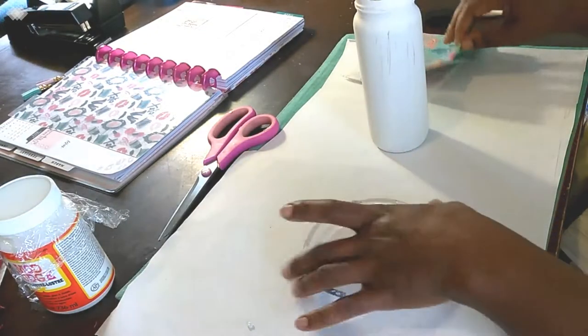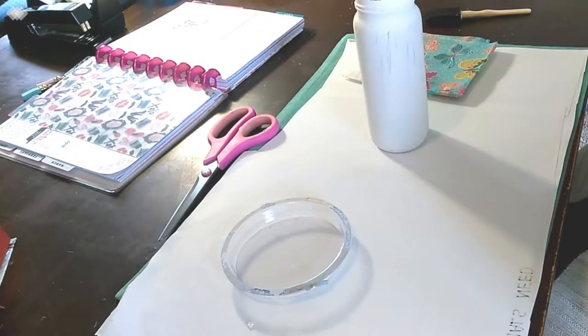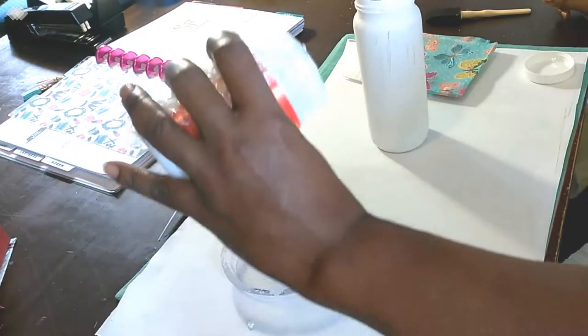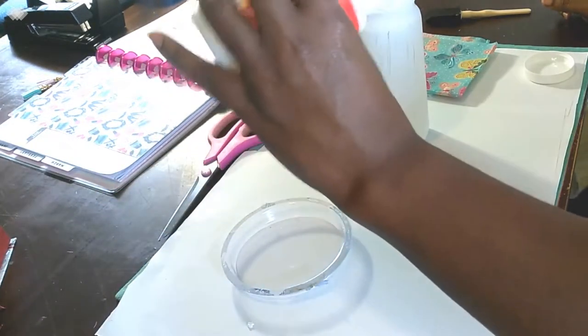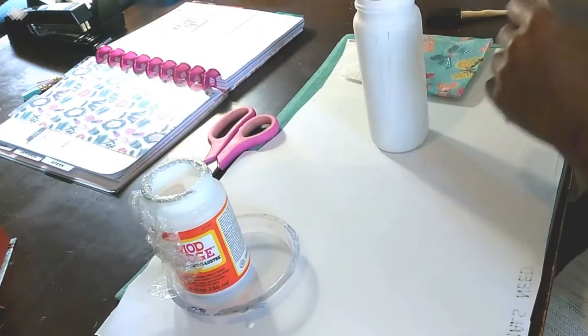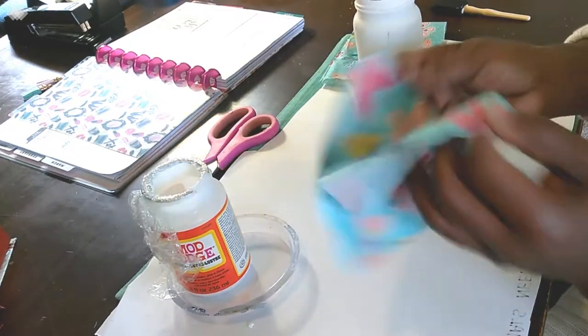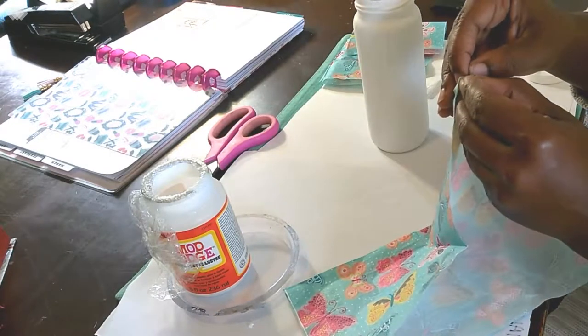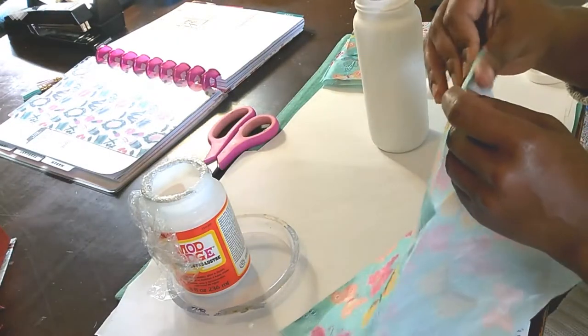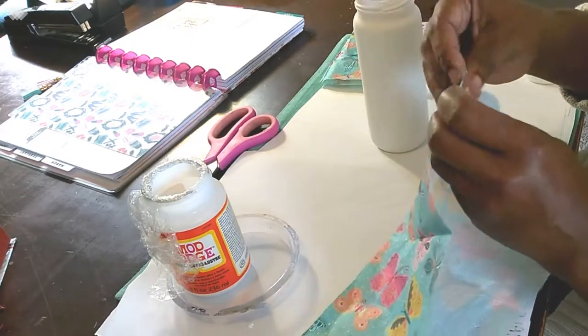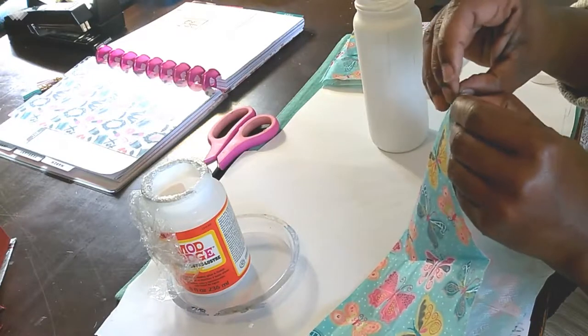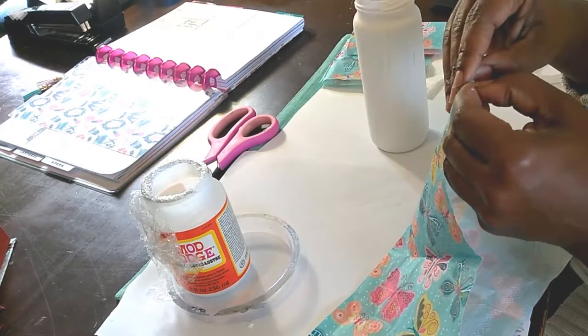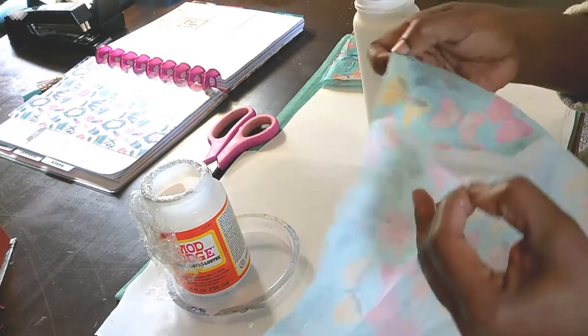The next step will be to apply the Mod Podge onto the jar and place the napkin on top of that. It looks like I'm getting pretty low on Mod Podge, so I think I'm going to have to just use it out of the jar. Now what I wanted to show you was that most of these napkins are two-ply, so you want to make sure that you are only using the top imprinted layer of the two-ply napkin. What you'll need to do is just get to the edge, crinkle it best you can, and try and separate so that you can separate those two layers. You can basically just discard the lower portion.